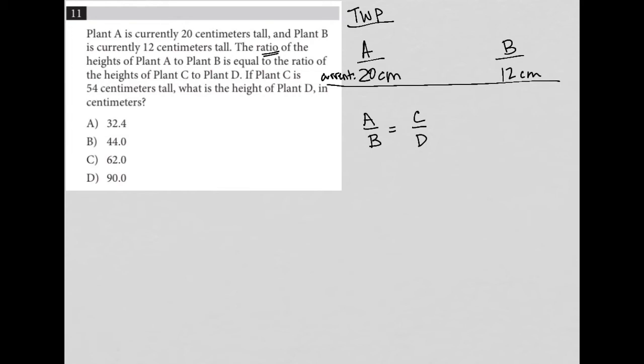The next sentence says if plant C is 54 centimeters tall. So I'm going to just put C in the middle. It doesn't matter the order. I'm going to say 54 cm. What is the height of plant D? So we have a D here and question mark.